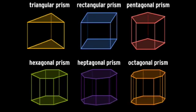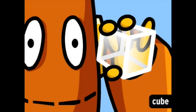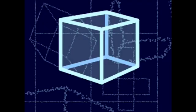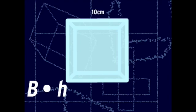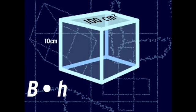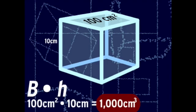Let's start with a regular rectangular prism, also known as a cube. This cube has sides that are 10 centimeters long. The formula for finding the volume of a prism is the area of the base times the height. Our base is a square, and the area of a square is length times width: 10 centimeters times 10 centimeters equals 100 centimeters squared. Multiplying that by the height gives us 1,000 centimeters cubed.